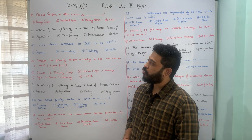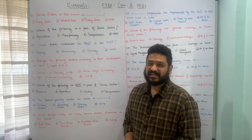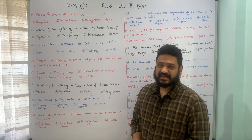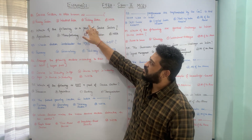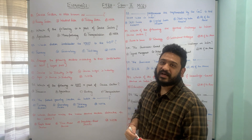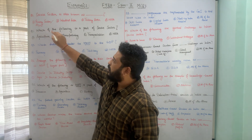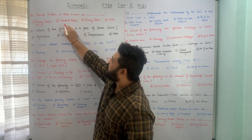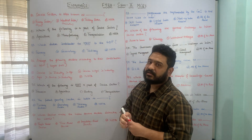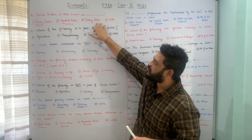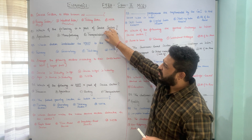The first question is: service sector is also known as what? Whether it is A. primary sector, B. industrial sector, C. tertiary sector, or D. none of the above. The correct answer is C. tertiary sector. Service sector is also known as tertiary sector. Primary sector is also known as agricultural sector and industrial sector is also known as secondary sector or manufacturing sector. I hope the question is clear.